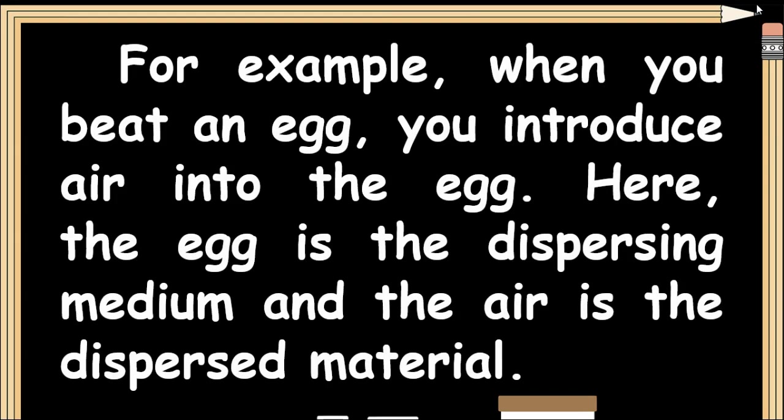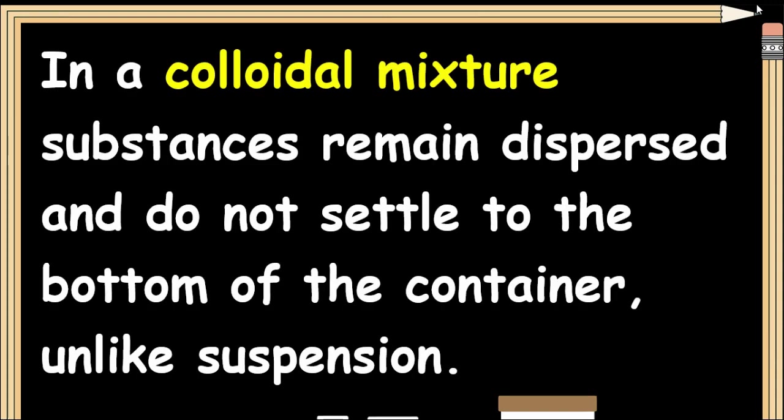For example, when you beat an egg, you introduce air into the egg. Here, the egg is the dispersing medium and the air is the dispersed material. In a colloidal mixture, particles remain dispersed and do not settle to the bottom of the container, unlike a suspension.